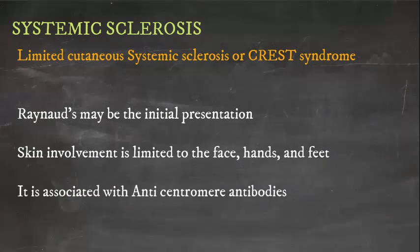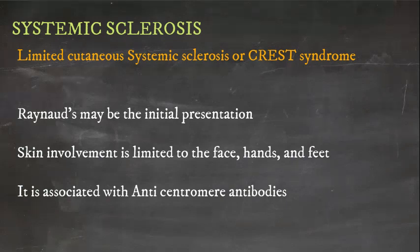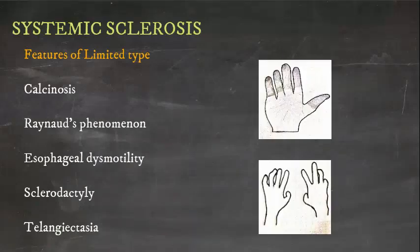Patients with the limited type have a good prognosis compared to the diffuse form. Limited cutaneous systemic sclerosis, or CREST syndrome, may present initially with Raynaud's phenomenon. Skin involvement is limited to the face, hands, and feet, and it is associated with anti-centromere antibodies. Features specific to this group are calcinosis, Raynaud's phenomenon, esophageal dysmotility, sclerodactyly, and telangiectasia.